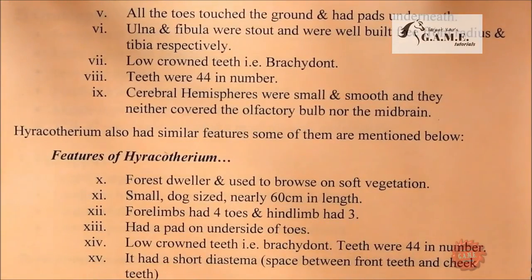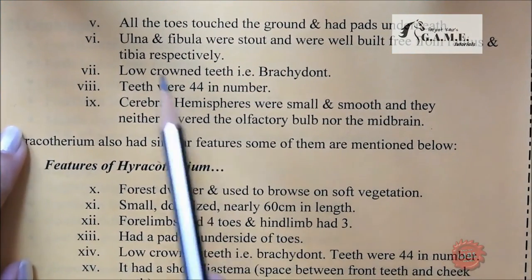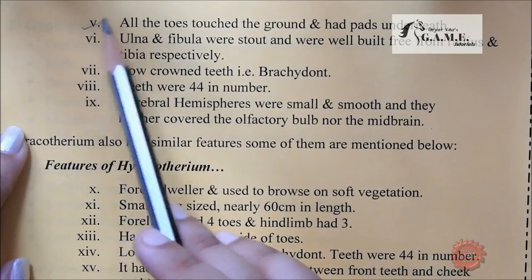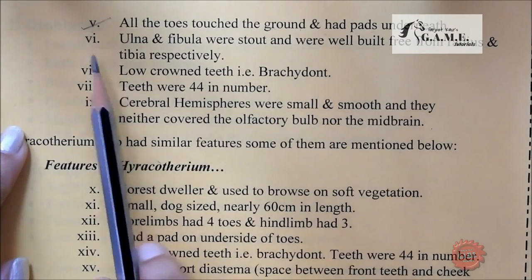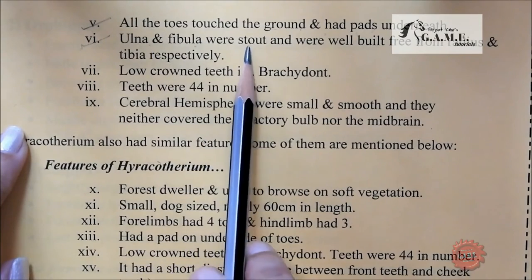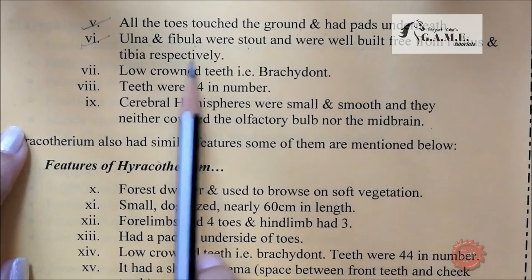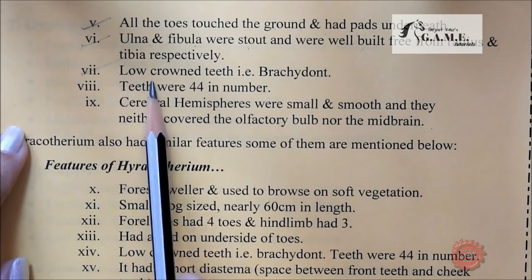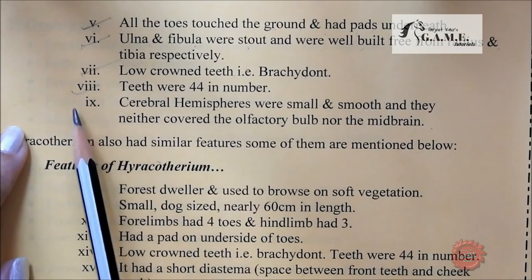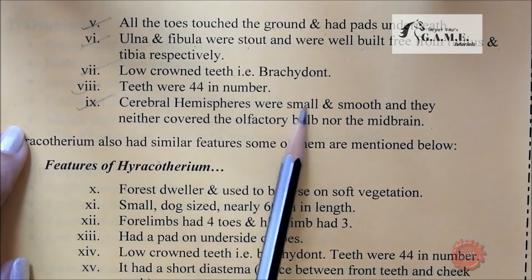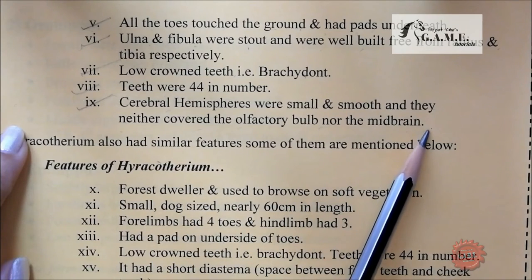All the toes touched the ground and had pads underneath. Ulna and fibula were stout and were well-built, free radius and tibia respectively. Low crown teeth, and teeth were 44 in number.